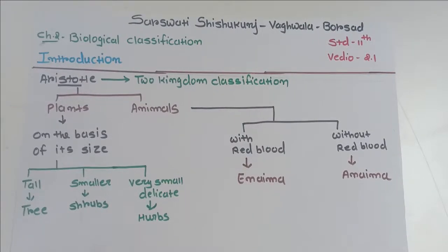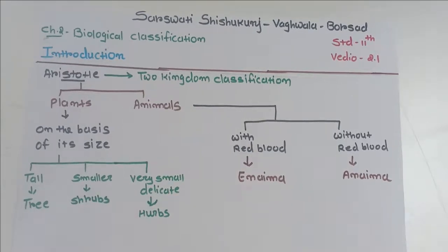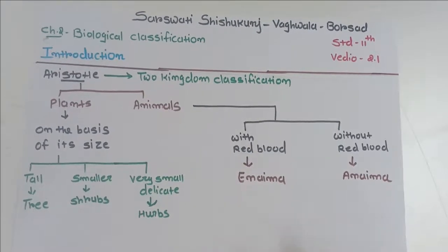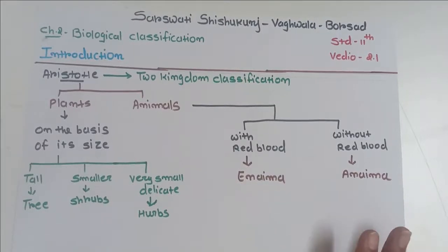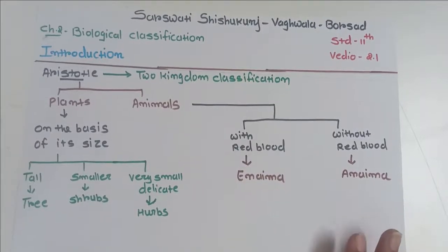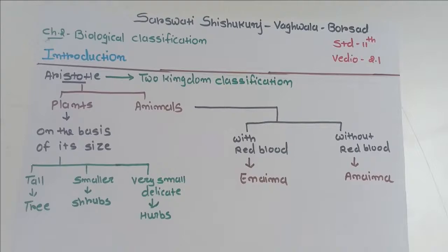So it is a very basic classification given by Aristotle. All plants synthesize their food, so they are autotrophs, but animals do not synthesize their food, so they are heterotrophs.